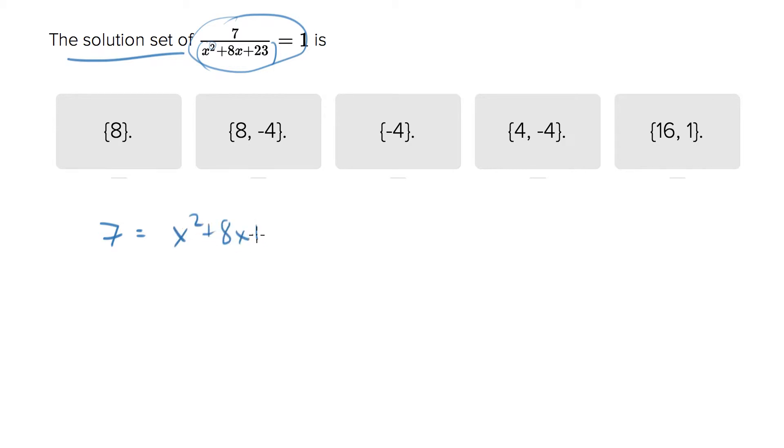What you can see is if we subtract 7 from both sides, then we end up with a quadratic equation that equals 0, which we can factor and then come up with the solutions.